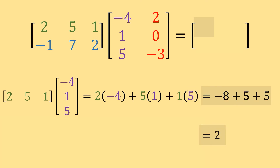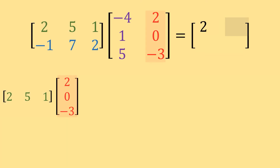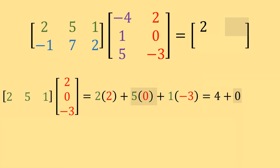So the value in row 1, column 1 of our result is 2. Moving to position row 1, column 2, we multiply row 1 from matrix A times column 2 from matrix B: 2, 5, 1 times column 2, 0, negative 3. That gives us 2 times 2 plus 5 times 0 plus 1 times negative 3, which equals 4 plus 0 minus 3, which equals 1. So 1 goes in position 1, 2 of our result.